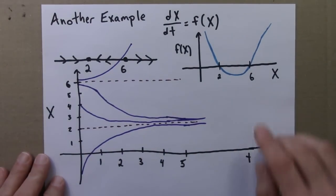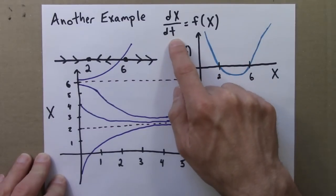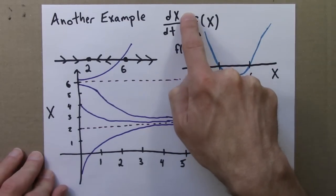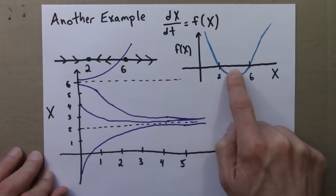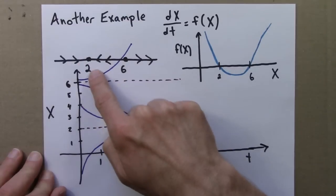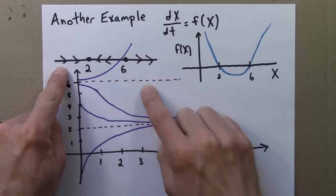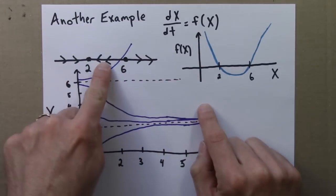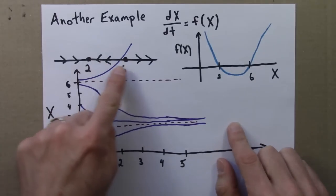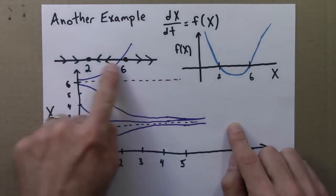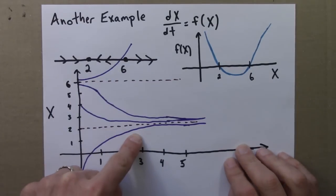We start with the differential equation. The differential equation is a rule for how x changes. It specifies the derivative for every x. From that we can quickly figure out which way things are moving. They're moving to the right when this is positive, to the left when it's negative. Then we can get our fixed points and see our stability right away. Then we can take this plot and sketch some solutions.